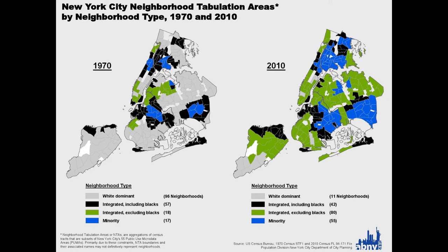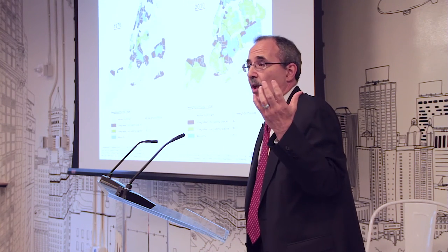Back in 1970, the population of the city was over 60% non-Hispanic white — essentially a European white city. There were 96 out of 188 neighborhoods that we call white-dominant areas. You see Staten Island, Brooklyn, Queens, East Bronx, Northwest Bronx — all essentially white bastions, 70, 80, 90% white. In 2010, we looked at the transitions of those areas. Of those 96 neighborhoods that were essentially European white, look at how many we have in 2010 — 11. The white population has declined dramatically.